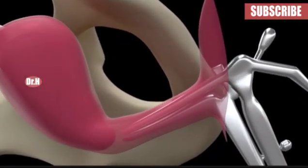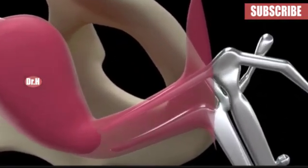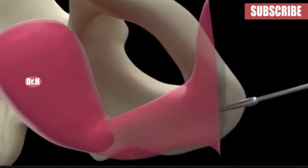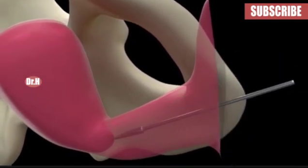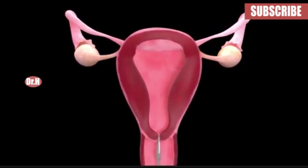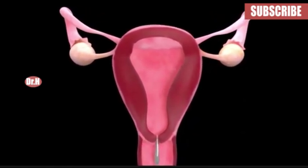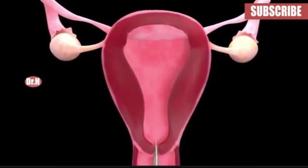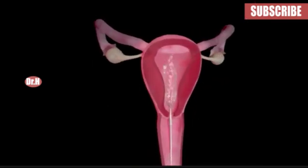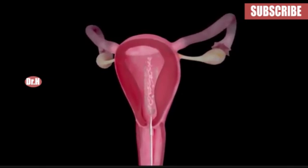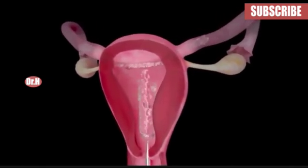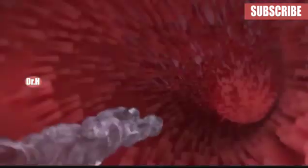The HSG test is done in an x-ray room. You are made to lie down on the table, and a speculum is inserted to visualize the mouth of the uterus, or the cervix. Then a cannula is inserted into the vagina, and through it an oil-based contrast medium is very slowly injected into the uterus.